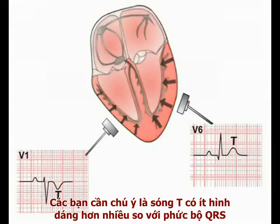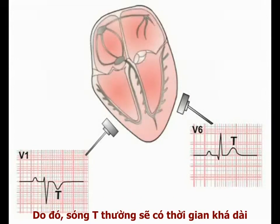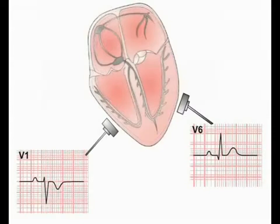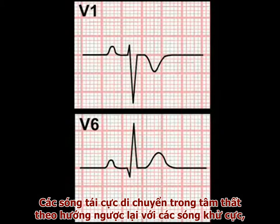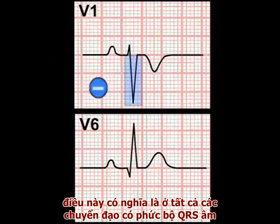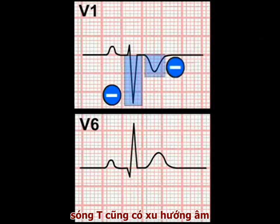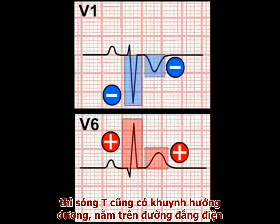Note that the T-wave has a very different morphology to the QRS complex. Cardiac repolarization spreads relatively slowly through the muscle mass, outside the conducting system. Hence, the T-wave is considerably longer in duration and therefore broader on the ECG paper compared to the QRS complex. You should also realize that repolarizing current moves through the ventricles in the opposite direction to the depolarization wave, meaning that in leads with an overall negative QRS complex, the T-wave also tends to be negative, lying below the isoelectric line. While in leads with an overall positive QRS complex, the T-waves are also positive, lying above the isoelectric line.